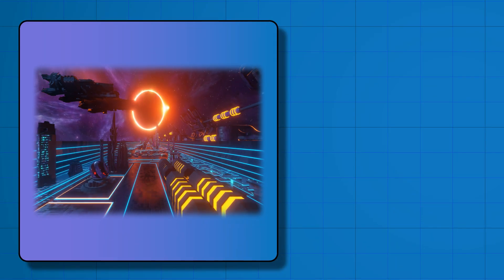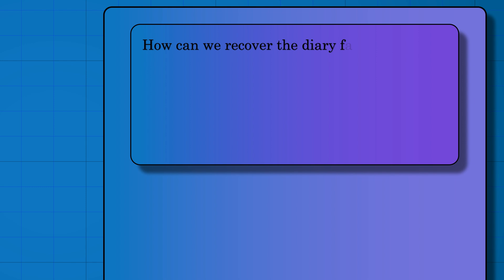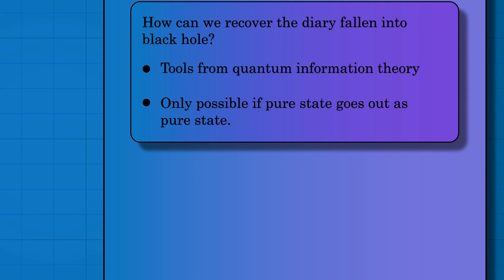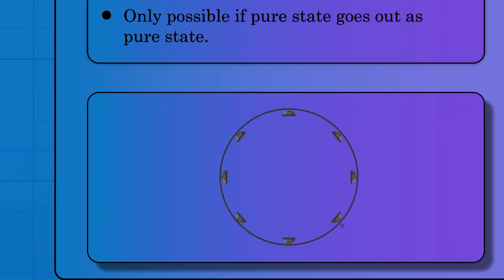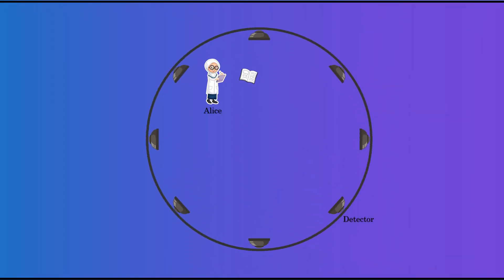One powerful tool in our pocket is quantum information theory. In quantum information theory, a common task is for the receiver to recover the quantum information sent by the sender. Using information theory, we can frame the black hole paradox as a simple communication problem.